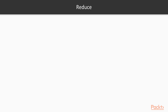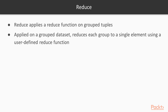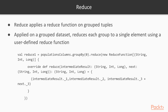The next one is reduce. Reduce applies a reduce function on grouped tuples. You can group things as before for sum, min, and max, but you can actually do much more sophisticated computation. You are telling Flink what to do in the reduce — not just sum. You can override reduce using a reduce function, following a specific syntax, and perform a custom reduce operation. We will show this in the shell now.